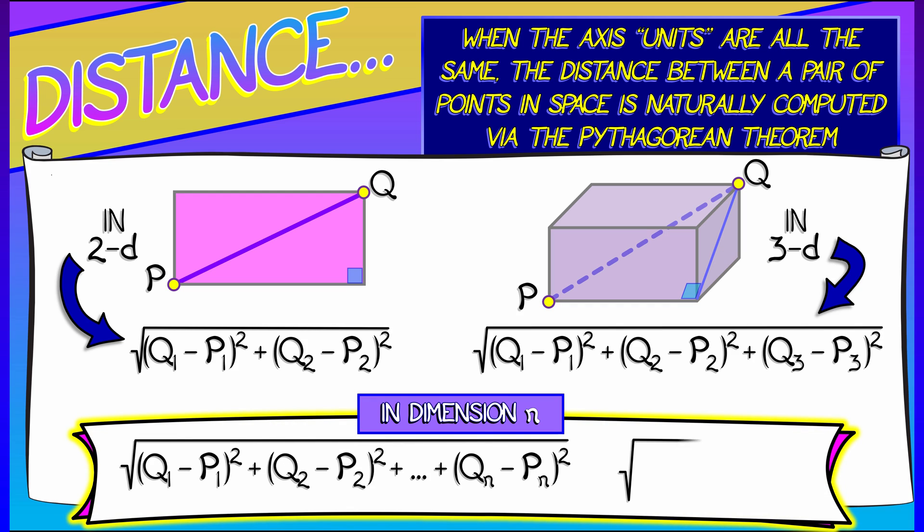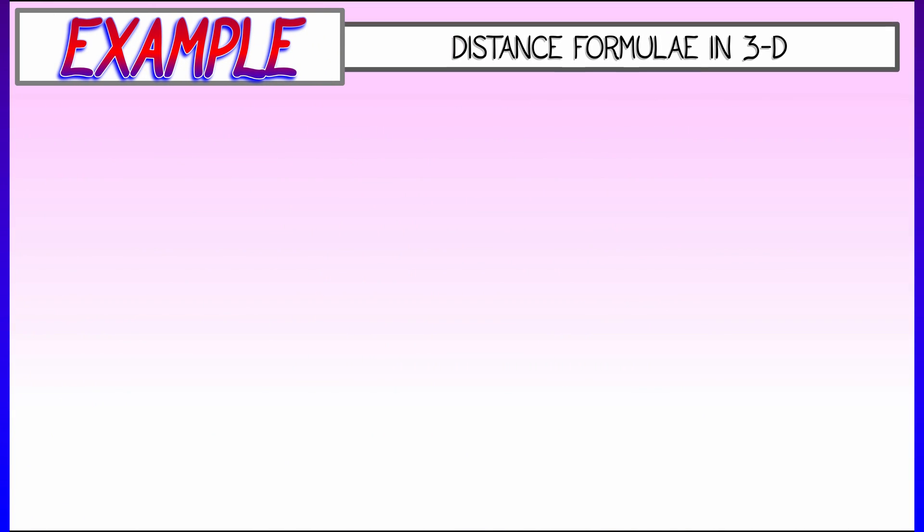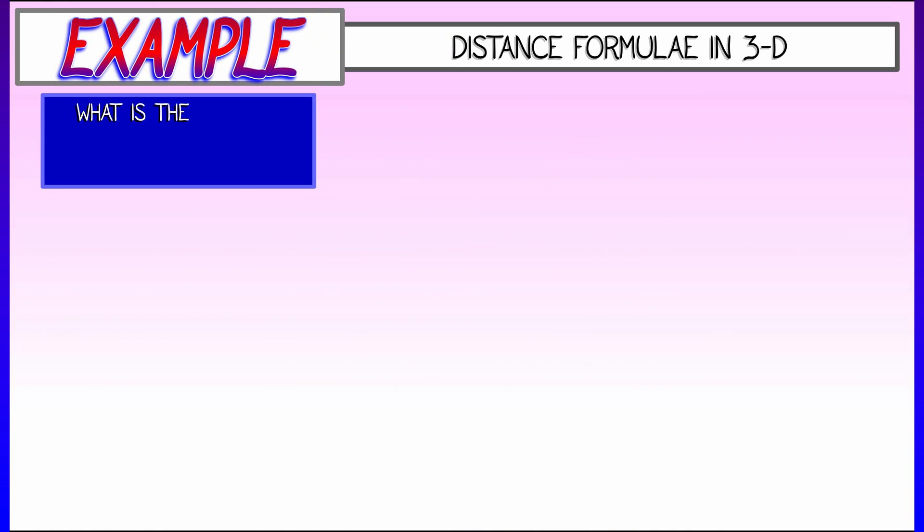And proceeding inductively, you can get the corresponding formula in n-dimensional space. To get the distance between two points in n-dimensional space, you take the differences in the ith coordinate, square those, take the sum of those as i goes from one to n.